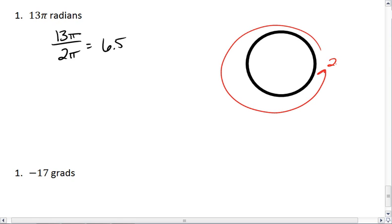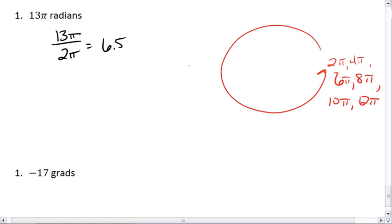One rotation would be 2 pi, another rotation gives me 4 pi, another rotation 6 pi, another rotation is 8 pi, another rotation is 10 pi, 12 pi, and then 13 pi brings me to the other side.